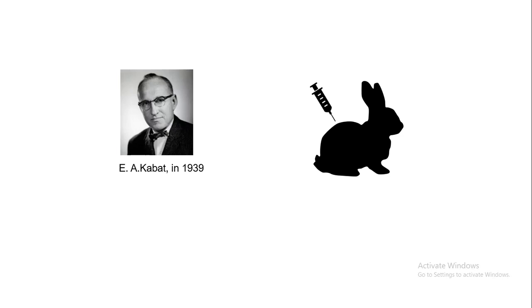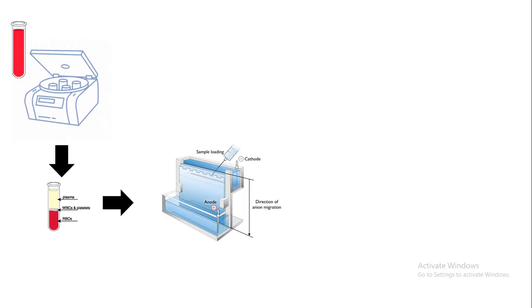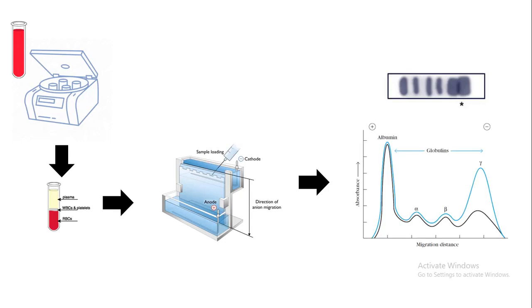E.A. Kabat in 1939 did a wonderful experiment where they injected a rabbit with ovalbumin, then extracted the blood from the rabbit and centrifuged it. As a result, they could get a pellet of clumped RBCs and WBCs, and whatever remained is the plasma or serum. They took the serum and ran it on a gel, and after that they found a characteristic band pattern and characterized those bands, naming them alpha, beta, gamma, etc.